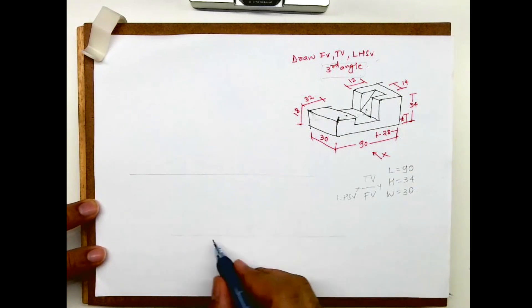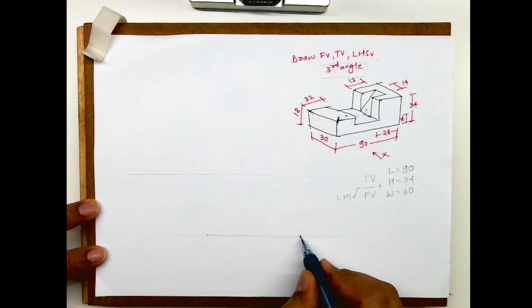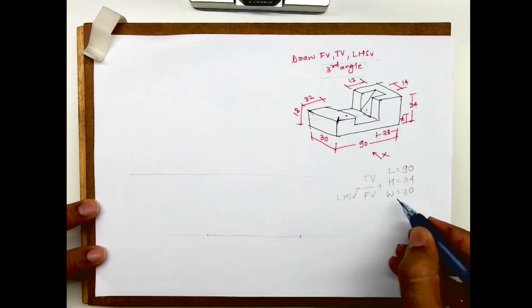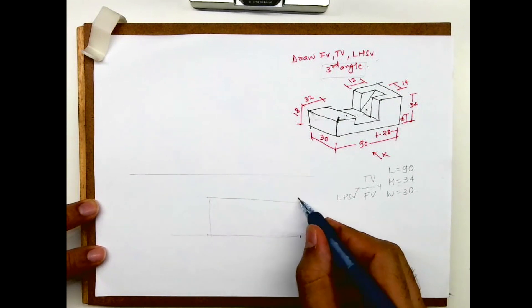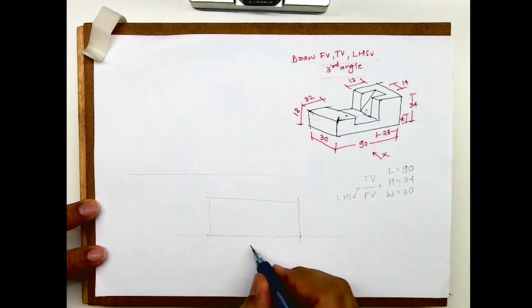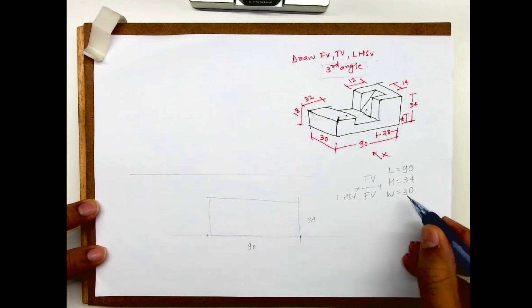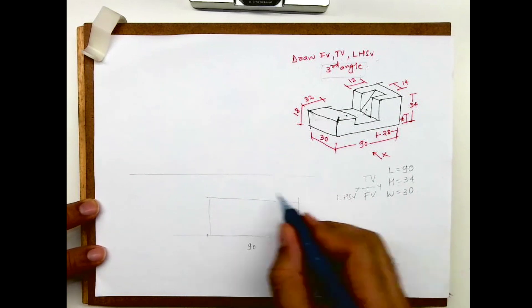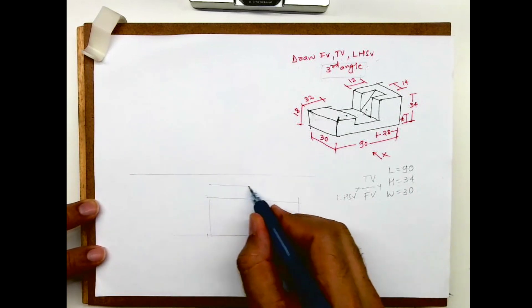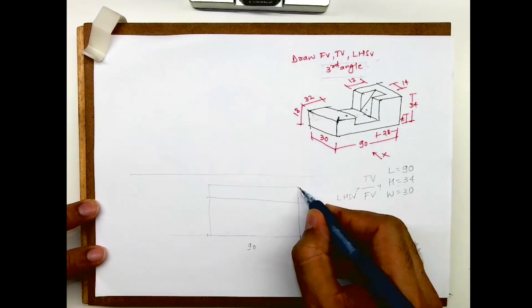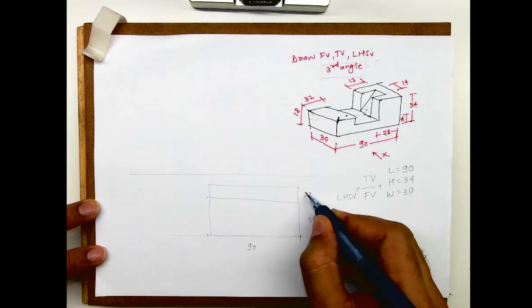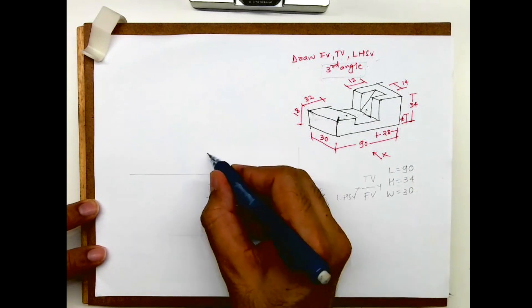I'm doing it in rough first. Length is 90, height is 34 — so I'll draw 90 by 34. Then width is 30, so I will leave 20, go up by 20, and then take the height again.